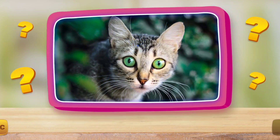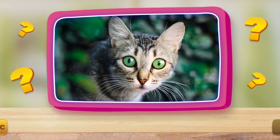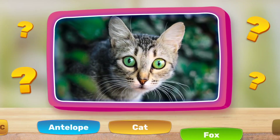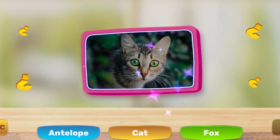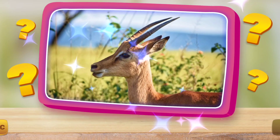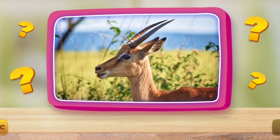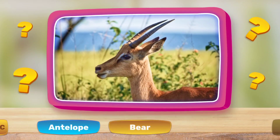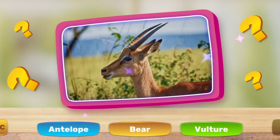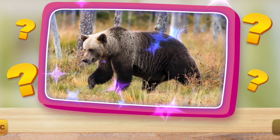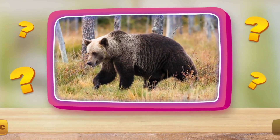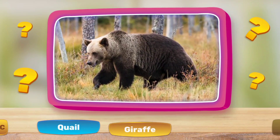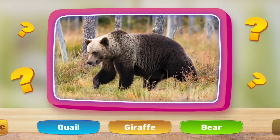Who is it? Antelope. Cat. Fox. And who is it? Antelope. Bear. Vulture. What is this animal? Quail. Giraffe. Bear.